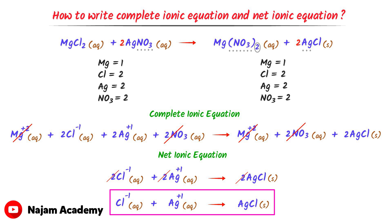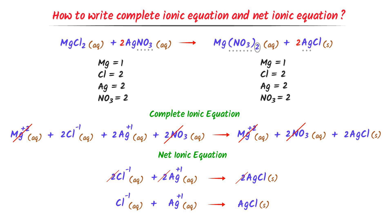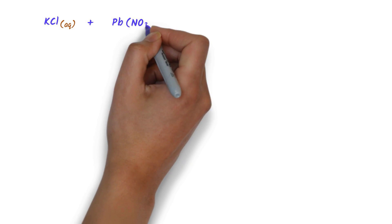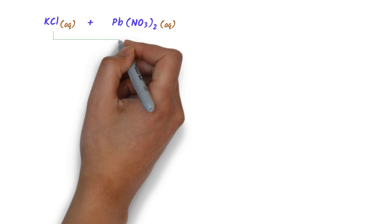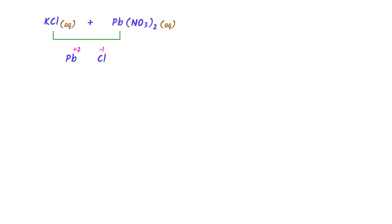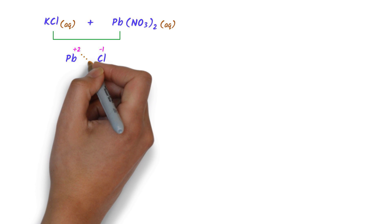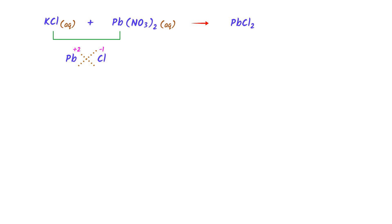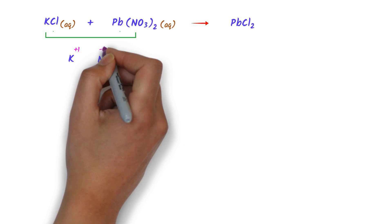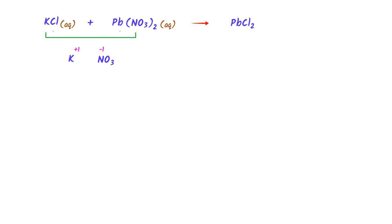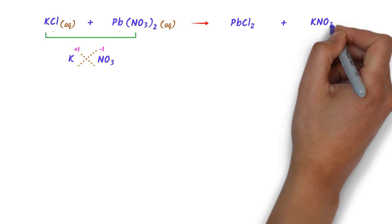Now I will use these steps to write the complete ionic equation and net ionic equation in a very short period of time. Consider this example: potassium chloride reacts with lead nitrate. The inner ions combine with inner: lead combines with chlorine. The charge on lead is positive 2 and that on chlorine is negative 1 — we cross them to get lead chloride, PbCl₂. The outer combines with outer: potassium combines with nitrate. The charge on potassium is positive 1 and that on nitrate is negative 1 — we cross them to get potassium nitrate, KNO₃.